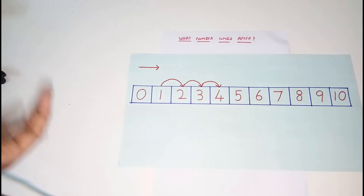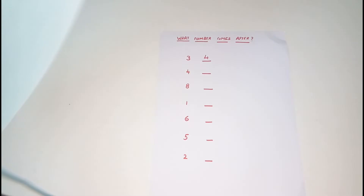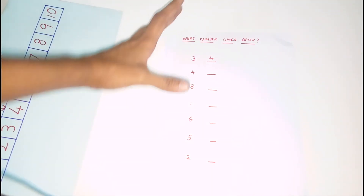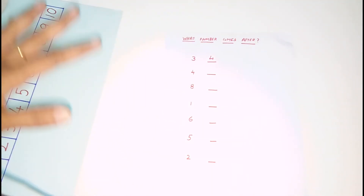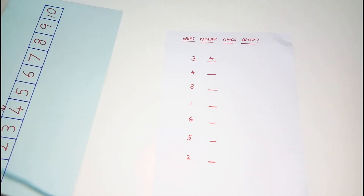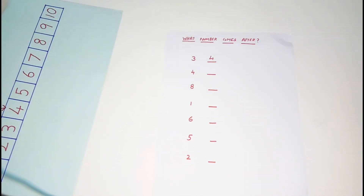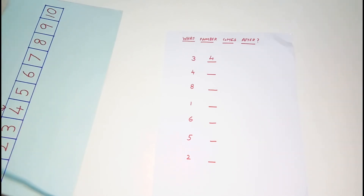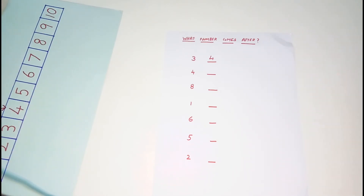Practice the numbers using the number strip, and you will find the answers. After mastering after numbers, you will be confident. You will start with 1 to 10, then move to 1 to 15, and then 1 to 20. You will do all numbers automatically.